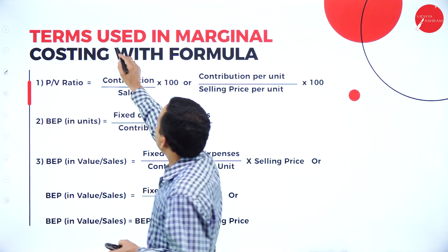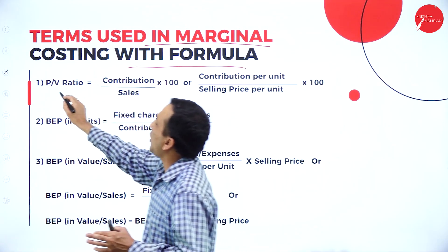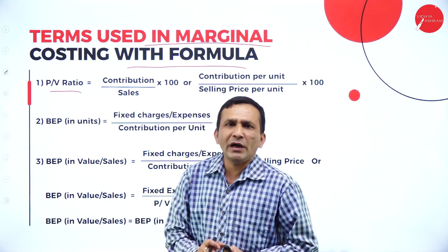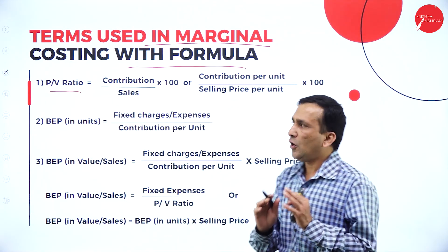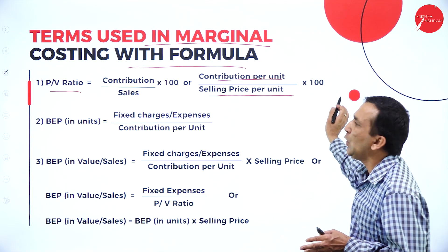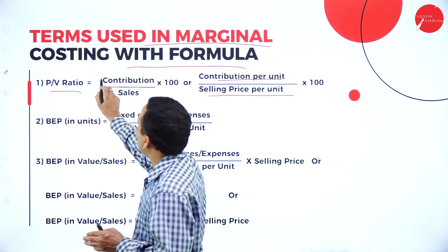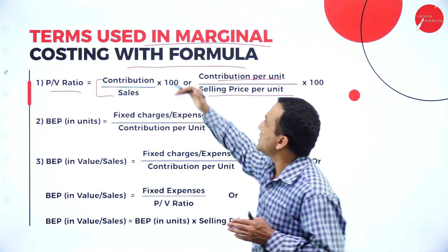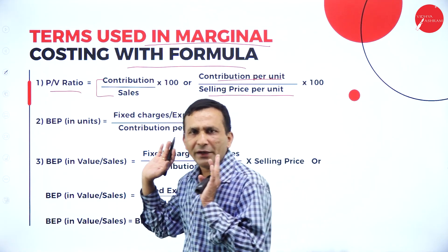Take the together total and write it in the outer column. From the contribution, when you subtract the fixed cost or fixed expense or fixed overheads, finally, if it is positive we call it profit; if it is negative, it is a loss. Moving forward, the terms used in marginal costing with formulas: the first one is Profit Volume Ratio, or PV ratio for short. The PV ratio formula is contribution divided by sales into 100, or alternatively, contribution per unit divided by selling price per unit into 100 — both give the same answer.